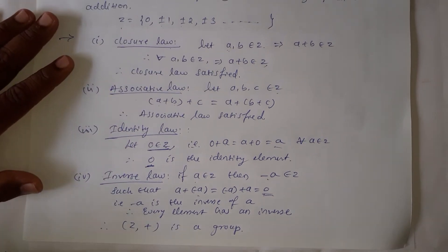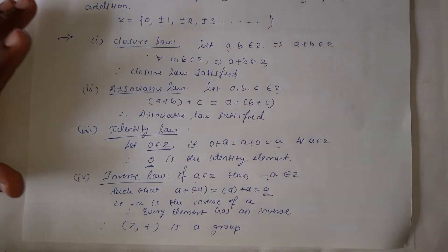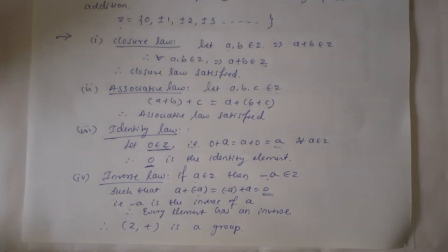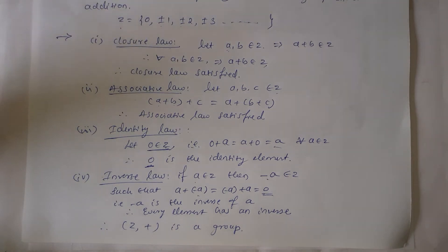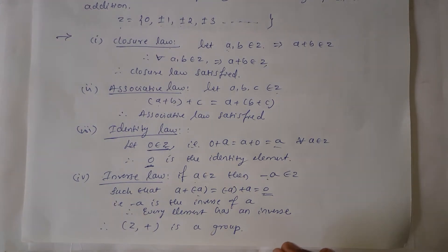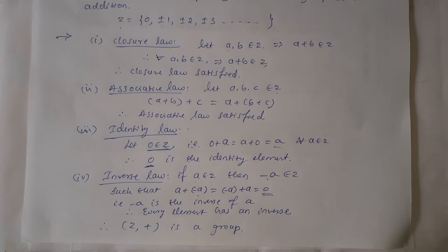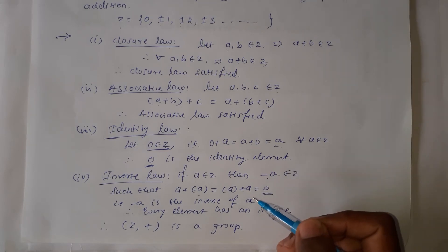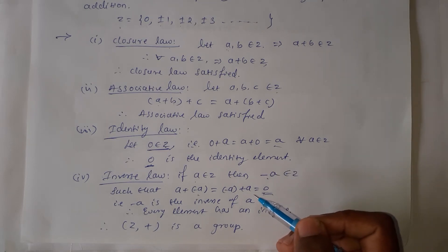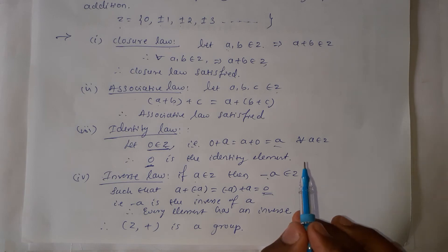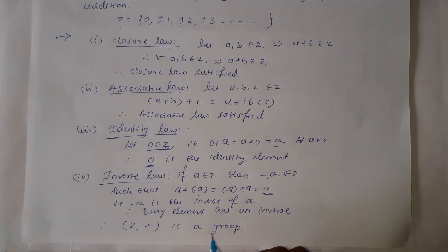To prove any set is a group, we have to satisfy the four laws: closure law, associative law, identity law, and inverse law. If all four laws are satisfied then only the given set is a group. If any law is not satisfied, we cannot say that the given set is a group along with the given binary operation.